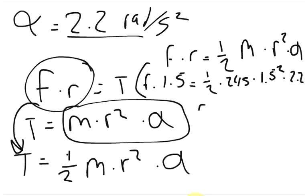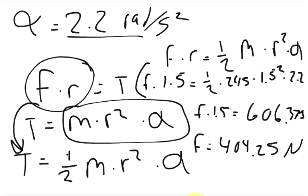So this simplifies to force times 1.5 equals 606.375. And so then we can just divide by 1.5 on both sides and we get that the force has to equal 404.25 newtons.